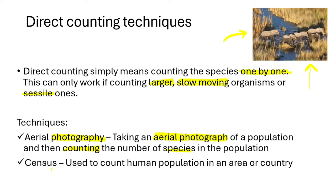The other method used for direct counting is known as a census. When a census is being conducted, we are actually trying to count a human population — how many humans there are in a country or an area. For example, we can determine that in South Africa, we have 61 million people. People go around interviewing people and then estimate how many people there are. These are two techniques of direct counting because they directly count species one by one.